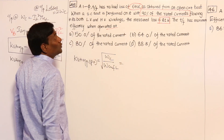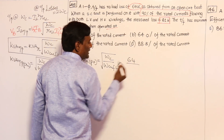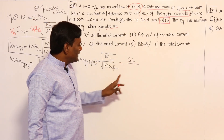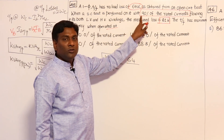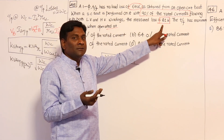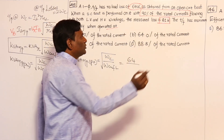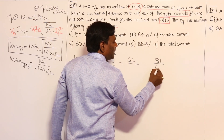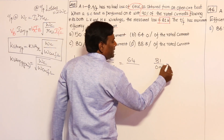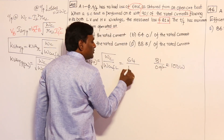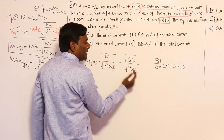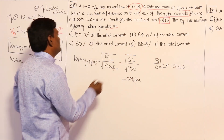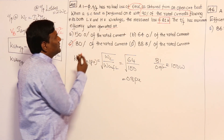KVA at which maximum efficiency occurs (per unit) equals the square root of (core loss divided by full load copper loss). Core loss is 64 W. Copper loss was measured as 81 W at 90% of rated current. To find full load copper loss, since copper loss is proportional to current squared: 81 divided by 0.9² gives 100 W at full load. Therefore, per-unit KVA at max efficiency equals √(64/100) = √0.64 = 0.8 per unit, or 80% of rated current.